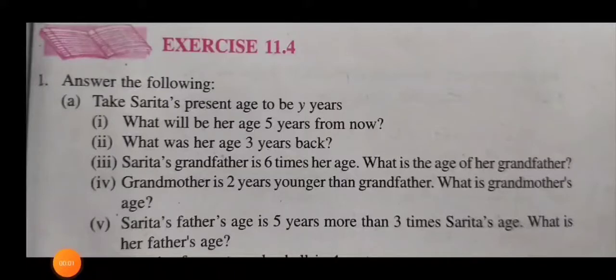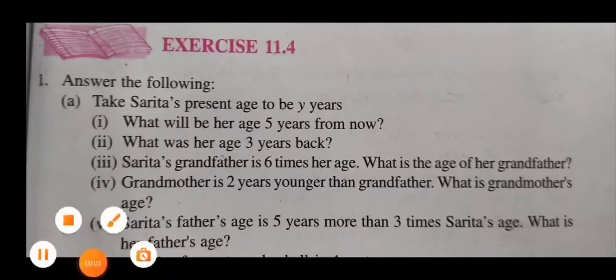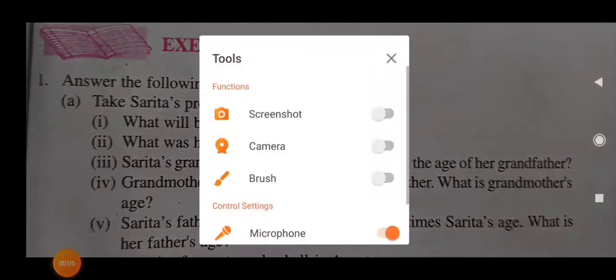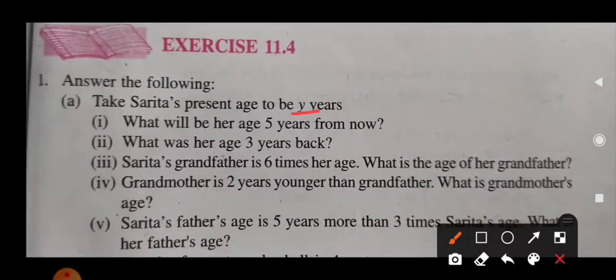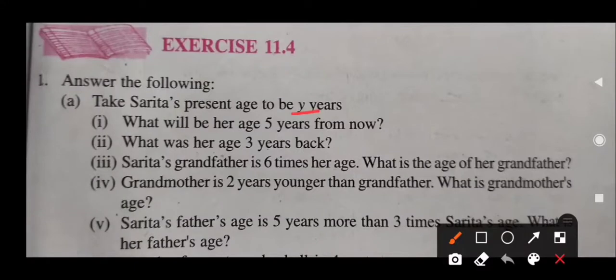Now let's take Exercise 11.4. It says you have to take Sarita's present age to be Y years. What will be Sarita's age 5 years from now? From now means after 5 years.